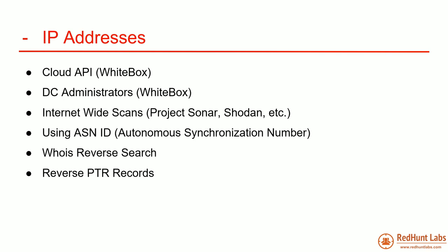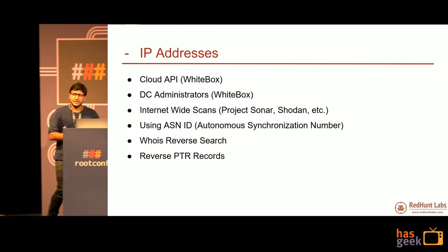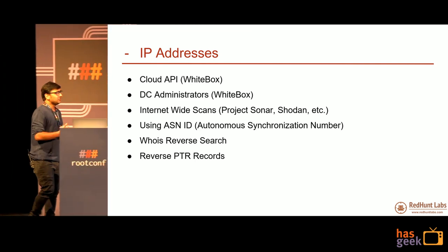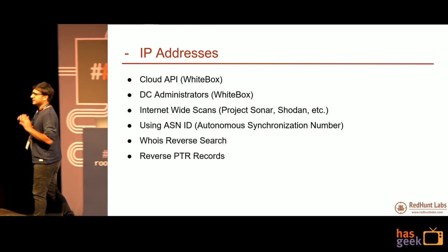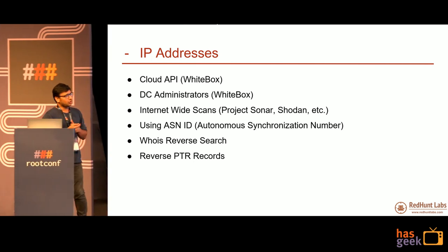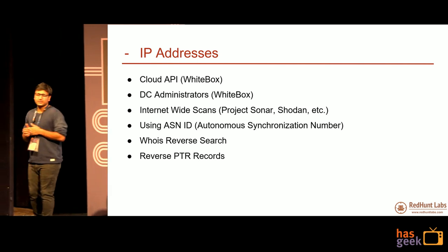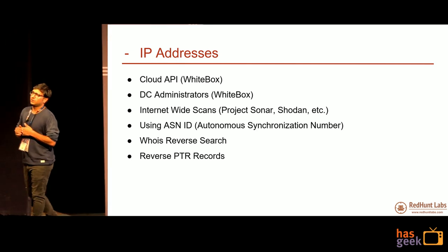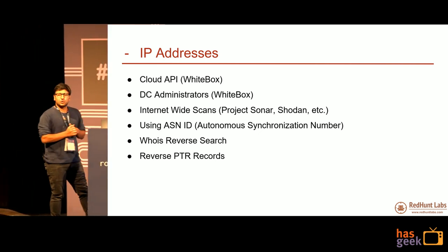For IP addresses, common sources include your cloud API if you're using AWS, GCP, or Azure, which give you APIs to fetch your IP address list. If you have a hybrid system with a data center, contact your admins. You can also use internet-wide scans using tools like Zmap or Zscan to find the whole attack surface including subdomains, IP addresses, and open ports. You can use ASNID — Autonomous System Number — assigned to organizations with large IP ranges. You can also use WHOIS reverse search and reverse PTR records to generate a list of IP addresses and do reverse pointer lookup to find domains related to the organization.